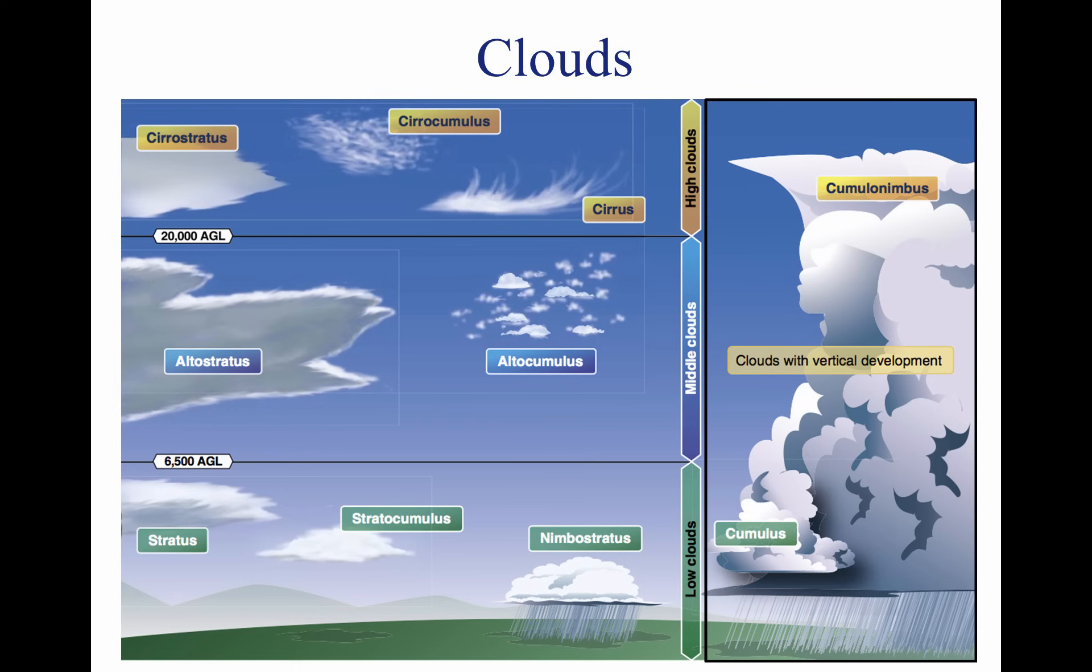Cumulonimbus clouds contain large amounts of moisture and unstable air, and usually produce hazardous weather phenomena, such as lightning, hail, tornadoes, gusty winds, and wind shear. These extensive vertical clouds can be obscured by other cloud formations and are not always visible from the ground or while in flight. When this happens, these clouds are said to be embedded, hence the term embedded thunderstorms.